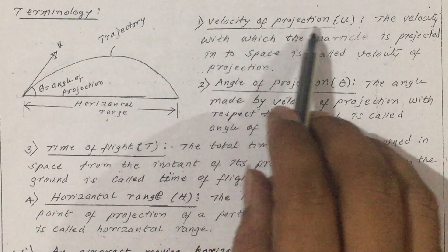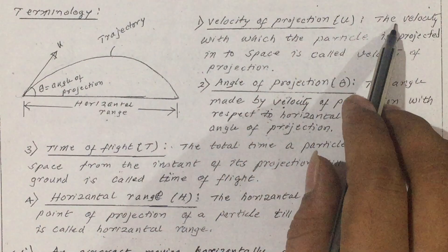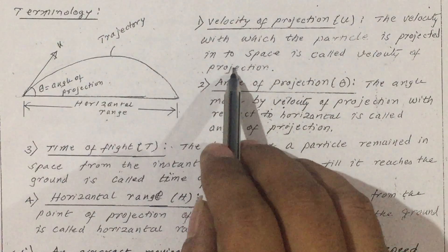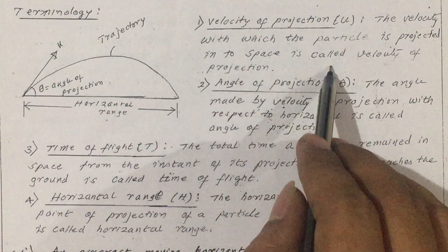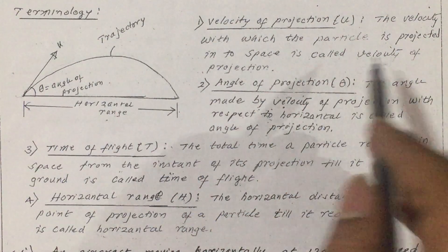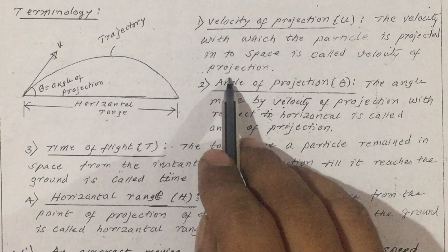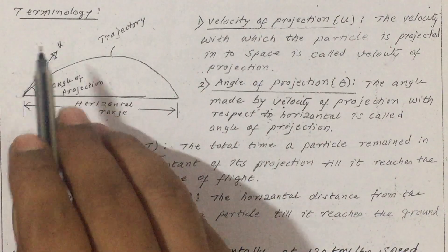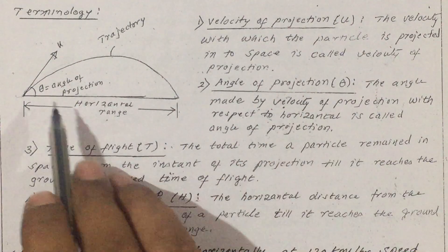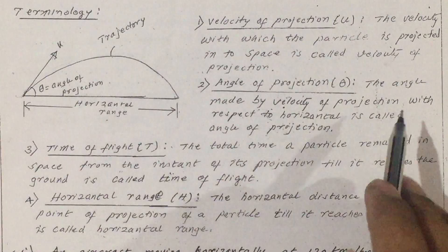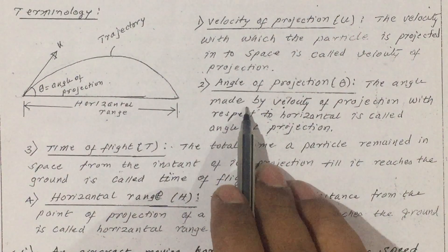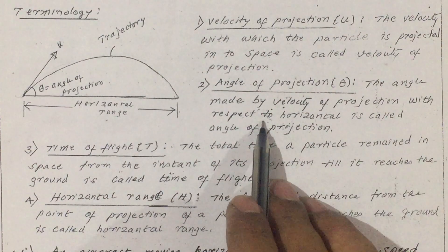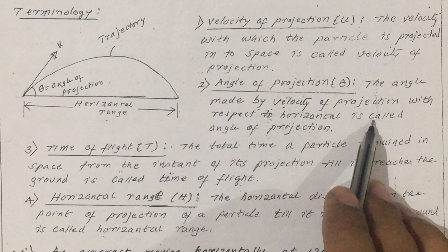Velocity of projection u — the velocity with which the particle is projected into space or thrown into space is called velocity of projection, that is u. Then angle of projection theta — the angle made by the velocity of projection with respect to the horizontal is called angle of projection.